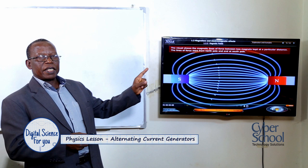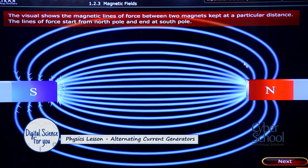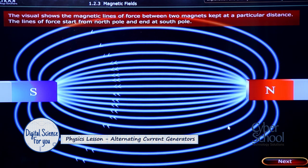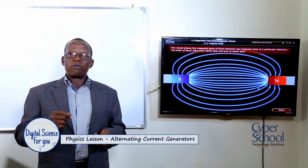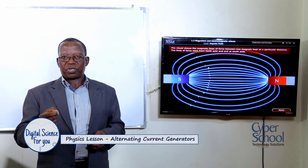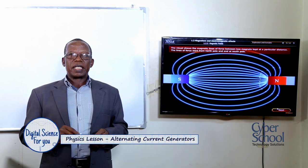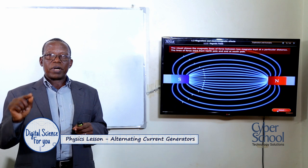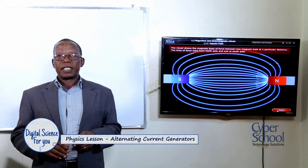You can see that the field lines run from north to south. Another part of the AC generator is the rectangular coil, which rotates in between these field lines. Current can only be induced into the coil when there is rotation — that is, when the coil or wire is cutting the field lines.